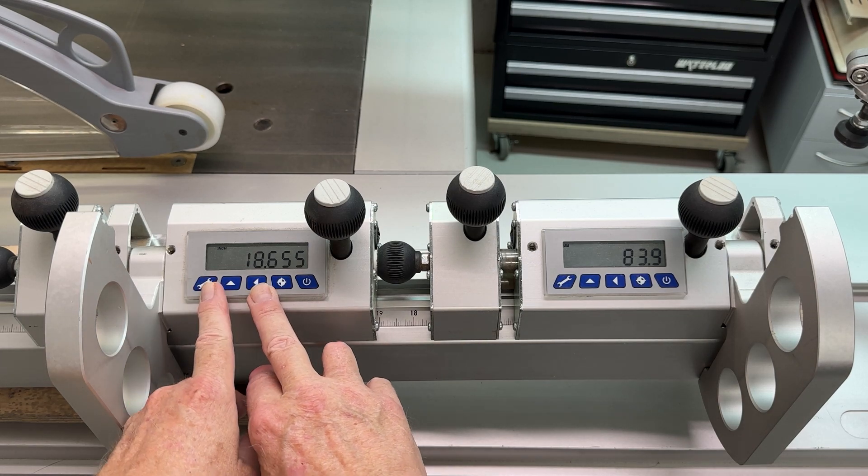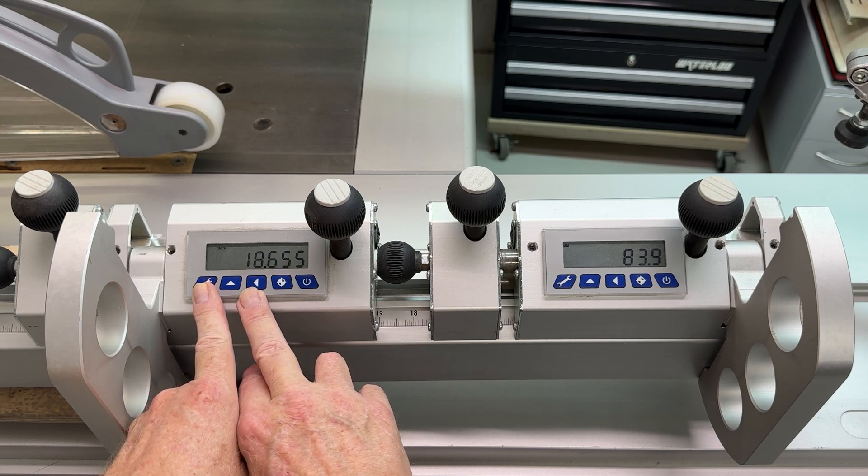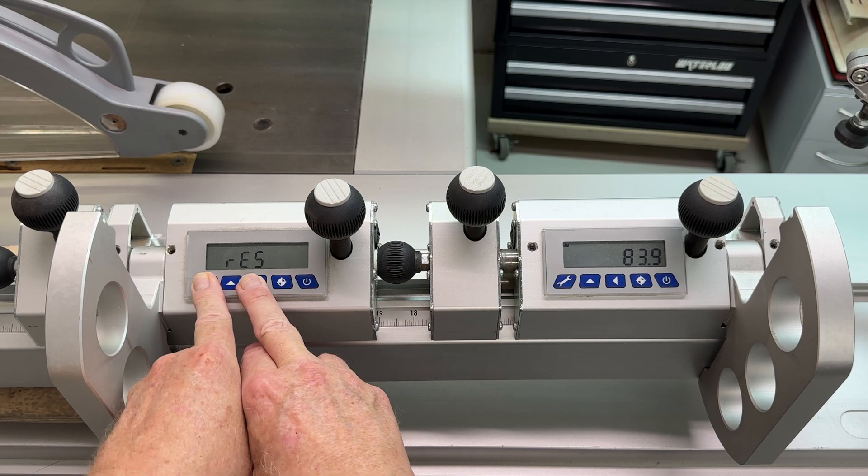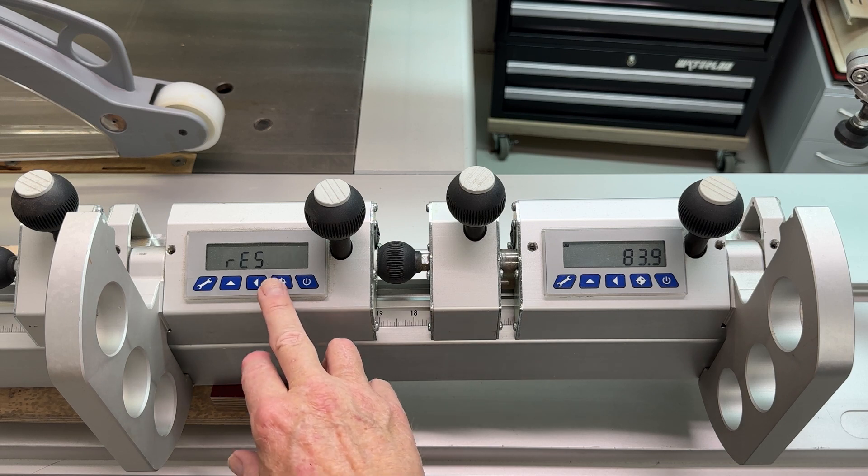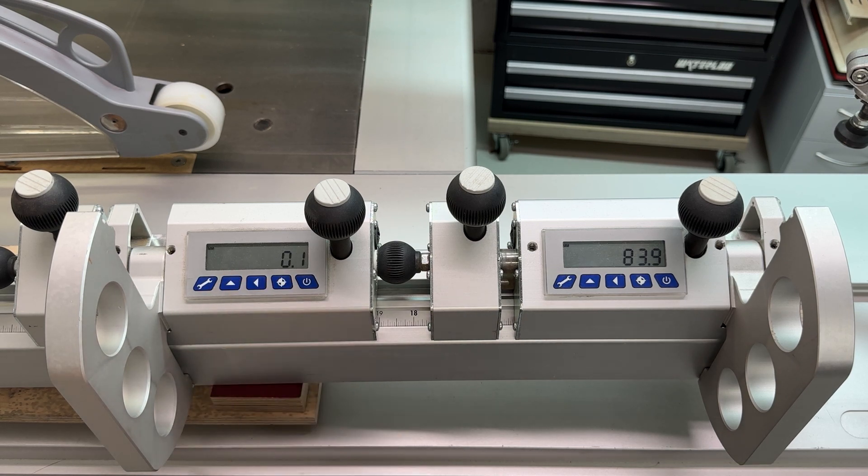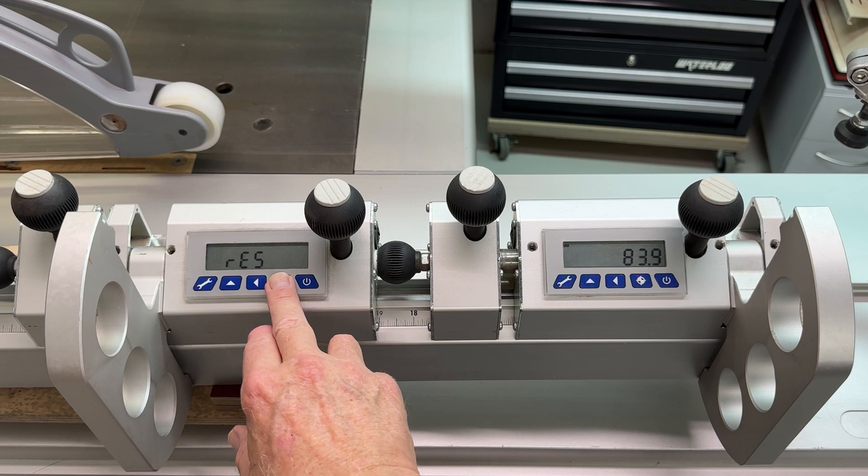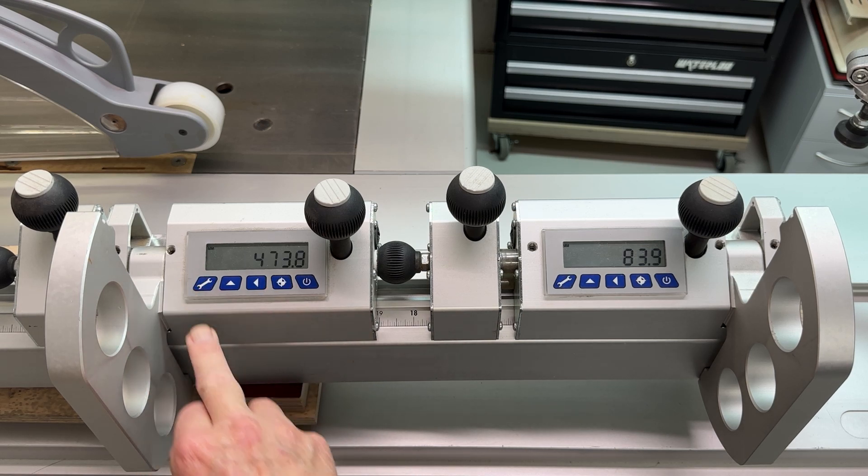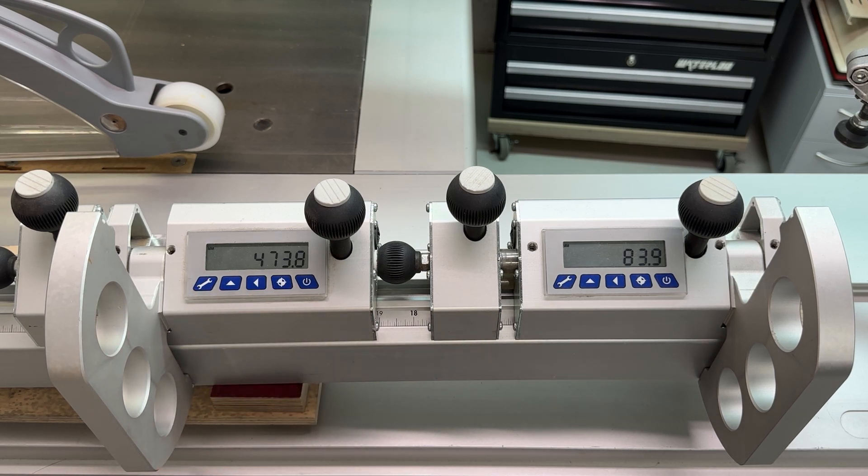Same thing over here, 18.65 inches on this one. We'll go to the resolution setting, move that to metric. 473.8. I think you'll find that 18.65 inches is 473.8 millimeters.